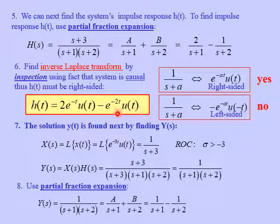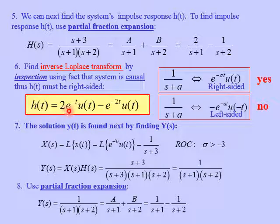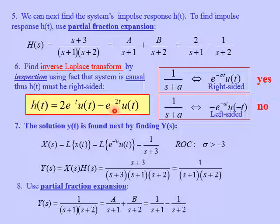We can see that this impulse response confirms that our system is stable. Both terms of the impulse response are decaying exponential functions, and as t goes to infinity, the impulse response decays to zero.